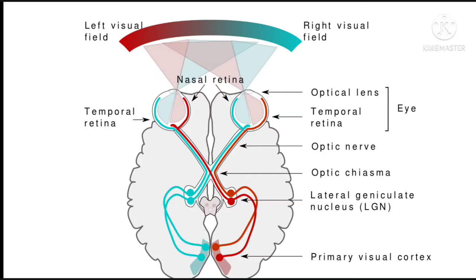Yeh sab hum red color ki light rays se samajh sakte hai. Yeh jo red color ki light rays dikhai de rahi hai, yeh jab eyes mein aati hai to lens ke dwara thodi si bent bhi ho jaati hai.